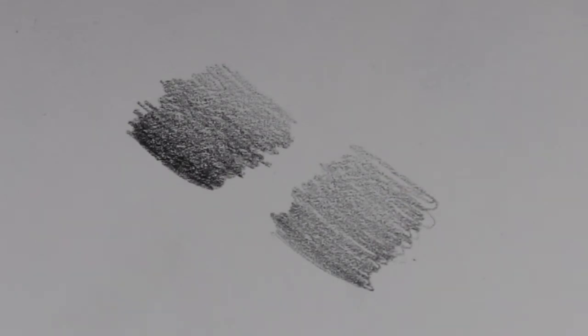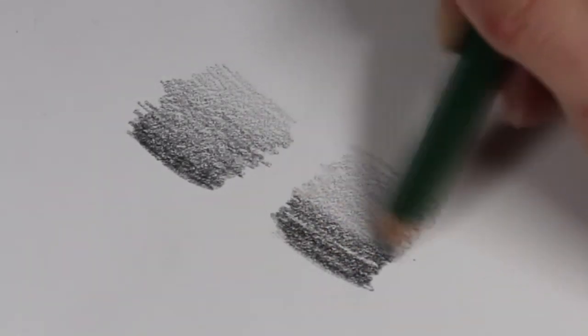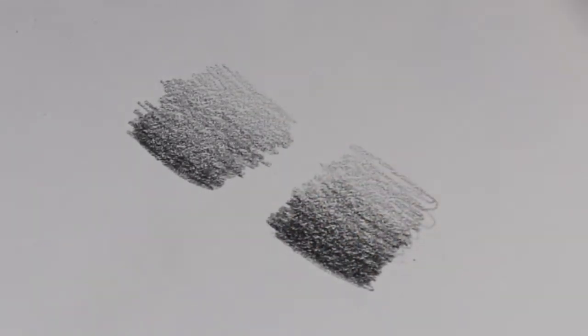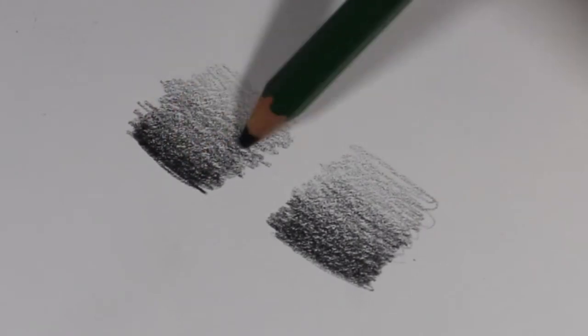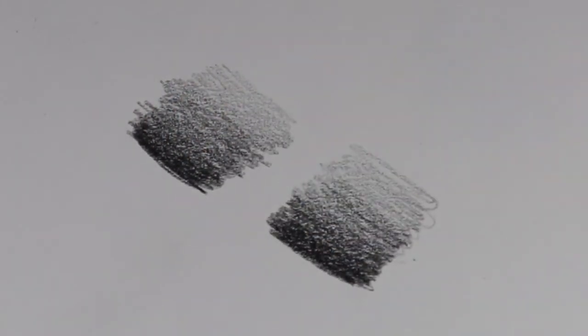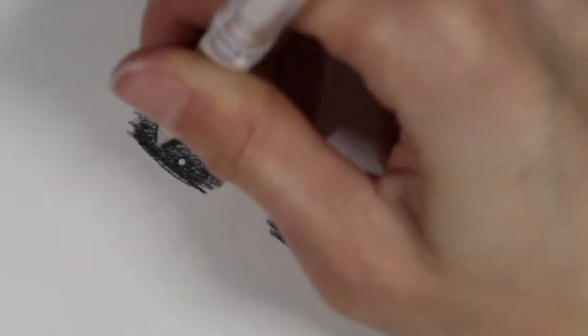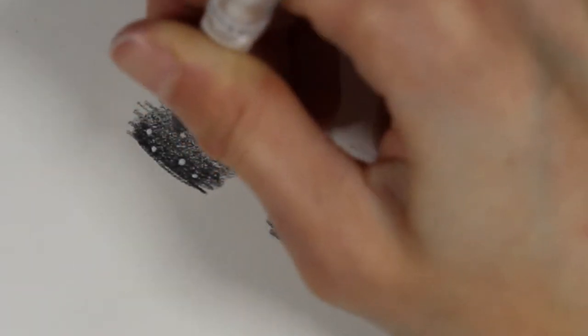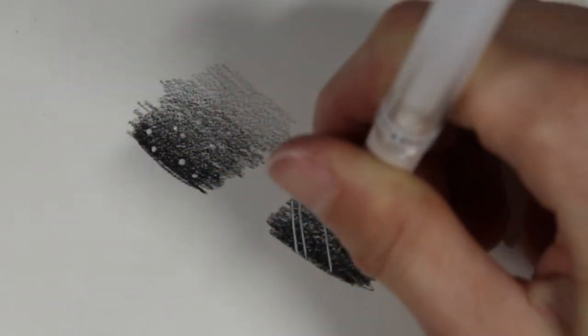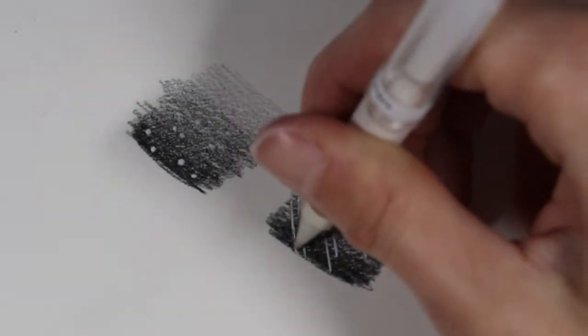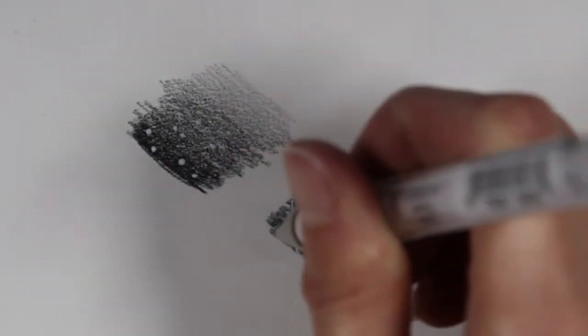What you can use these for are highlights and I'm talking about very bright reflective highlights. When you have a really small highlight like a glistening in the eye or something like that, it's hard to preserve that highlight when you're working. So it's much easier to go in later with the white gel pen and just add it and it creates a little bit more life in your work.